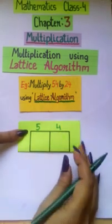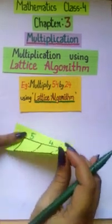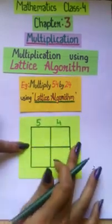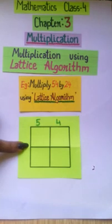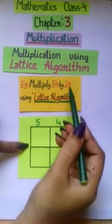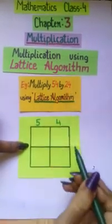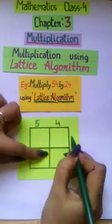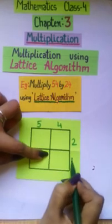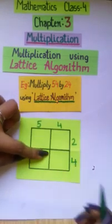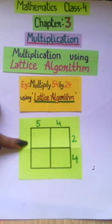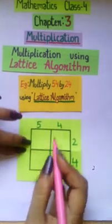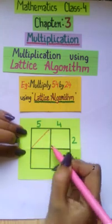Next we draw another two boxes below the earlier. Like this. And we write the multiplier that is 24 on the right hand side. 2, 4. Just like this. Then we draw diagonals in each box.